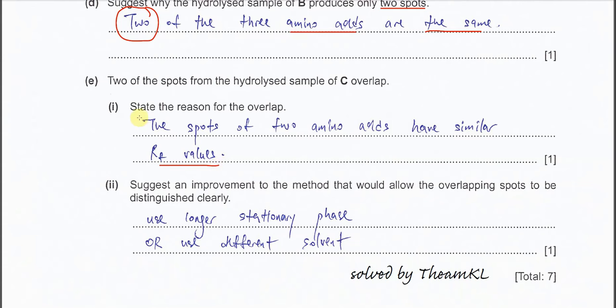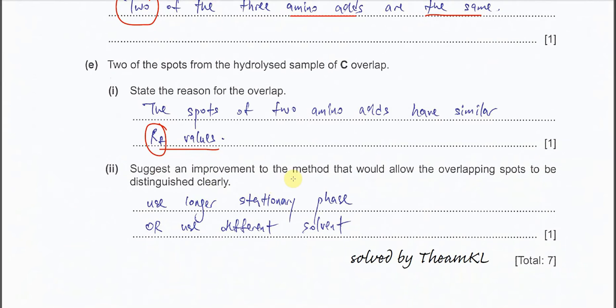But somehow, this is the answer in the marking scheme, right? So because of RF value. Okay, part two. Suggest an improvement to the method that would allow overlapping spots to be distinguished clearly.